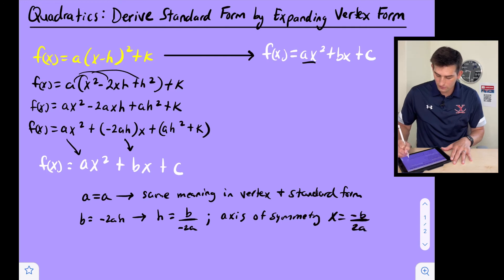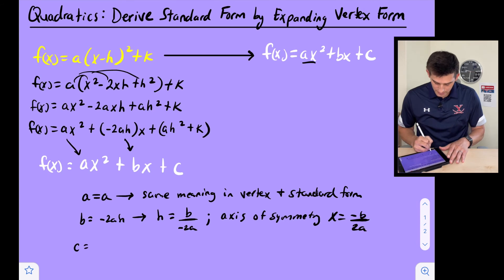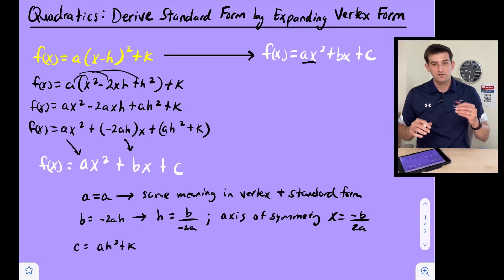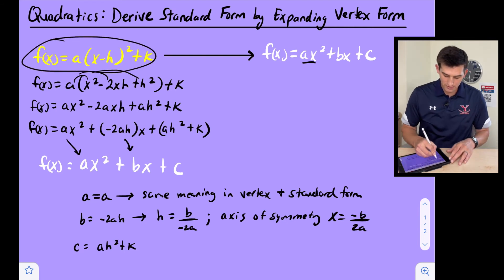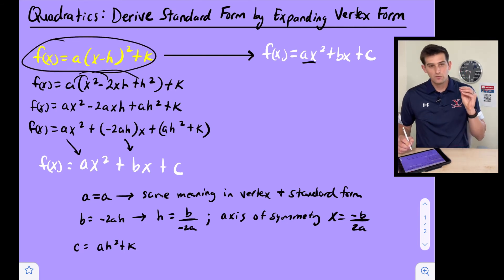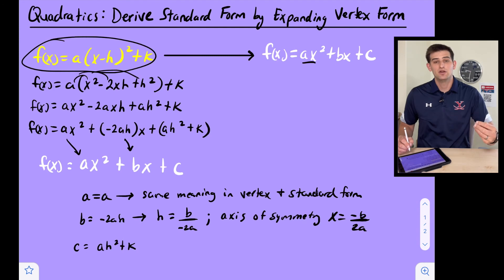Now lastly we're going to say c is equal to ah² + k. And now if we think about vertex form, we had it up here at the top in yellow. If we go ahead and plug in zero for x, what is that going to give us? Well anytime x is zero, whatever we get for the y value, that's our y-intercept, whenever x is zero.